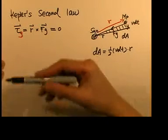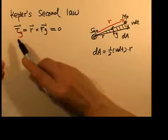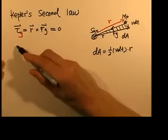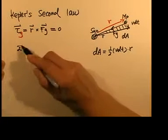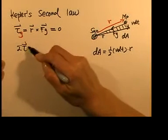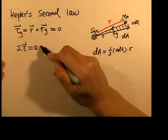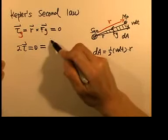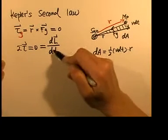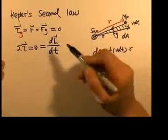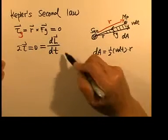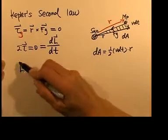From the previous chapter, when torque equals zero and this is the only torque on the planet, then the net torque also equals zero. Since net torque equals d(angular momentum)/dt — the rate of change of angular momentum — when that rate equals zero, the angular momentum L is constant.